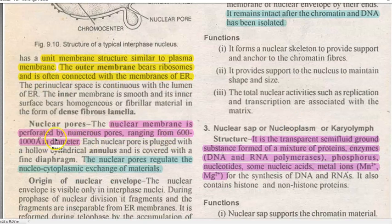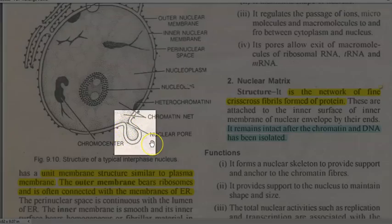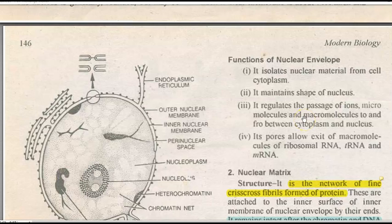The next feature is nuclear pores. The nuclear membrane is not a continuous structure — it is perforated with small micropores around 600 to 1000 Angstroms in diameter. Functions of the nuclear envelope include: isolating the nuclear material from the cell cytoplasm, maintaining the shape of the nucleus, and regulating the passage of ions, small molecules, and macromolecules to and from between the cytoplasm and nucleus — referred to as nucleo-cytoplasmic exchange.